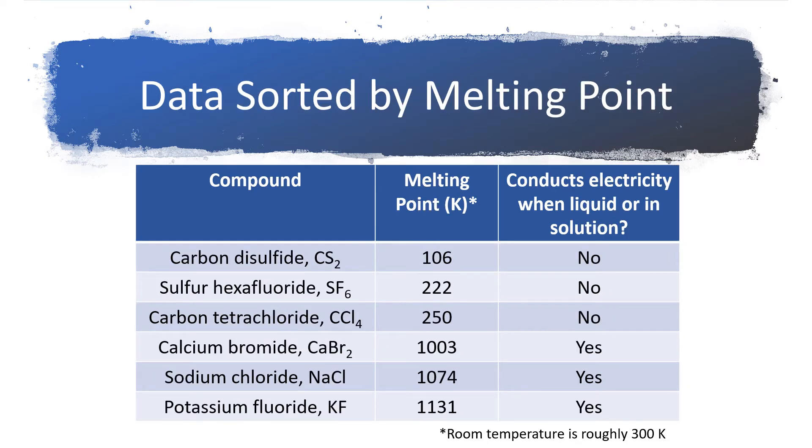On this slide, we're looking at that exact same data, but now we've sorted it from lowest to highest melting point. Room temperature roughly divides the data about here. So room temperature again was 300 Kelvin and notice at that same point, we have a break in conductivity.